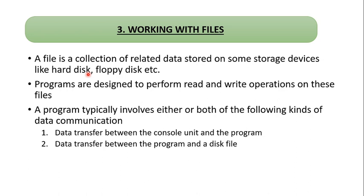There are two types of communication. One is data transfer between the console unit and the program, and data transfer between the program and the disk file. The console unit includes the keyboard for input and the monitor for output. The keyboard transfers data to the program — that is one type. The other type is the program interacting with files on disk.